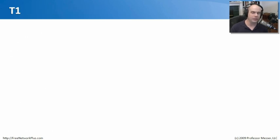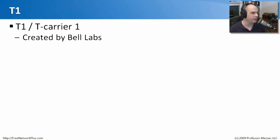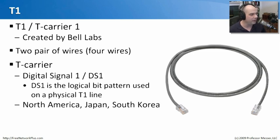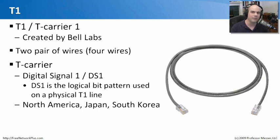If you needed a WAN connection to another site, you needed a T1. T1 stands for T-Carrier 1, a standardization created by Bell Labs. It uses two pairs of wires going into an environment, allowing you to communicate to something on the other side of the circuit. Being a circuit-based WAN technology, you built this circuit up and it was yours — nobody else could use it. This T-Carrier is also referred to as a DS1, digital signal one. DS1 is technically the logical bit pattern used over a physical T1 line, but in the industry we tend to use the terms interchangeably.